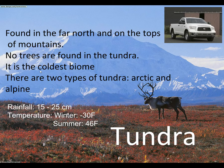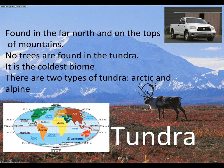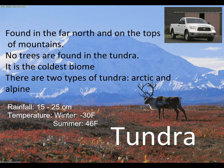The tundra is the coldest biome. We talked about the coldest forest being the taiga. If you look on the map, the taiga is up in the northern part, but it's not quite in the Arctic Circle. If you go farther north than the taiga, the trees stop growing because you're in the tundra. It's the coldest biome, there are two types — Arctic and Alpine — and there's very little rainfall.